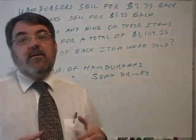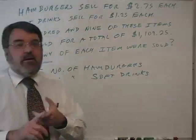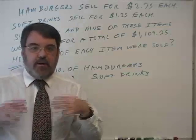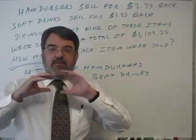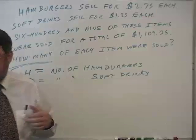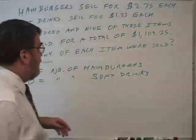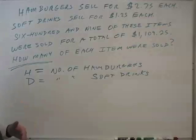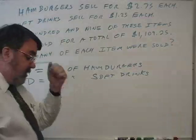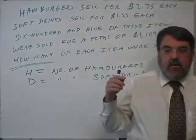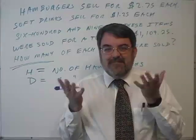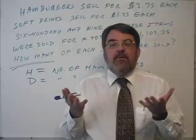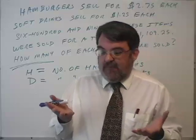We're given two clues in this problem. For the purpose of this video, I want to concentrate on one of them, because the purpose of this video is to really introduce you to units. In the next video, we'll start over and work this problem from scratch and complete it. So for the moment, let's look at the fact that a total of $1,109.25 was the sales. If we made over $1,000, where did that money come from? It came from two sources: hamburgers and soft drinks.